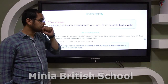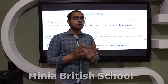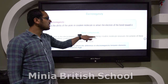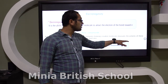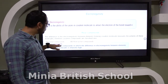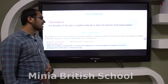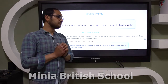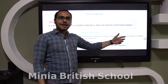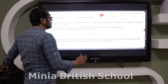Electronegativity plays a very important role in defining the kind of compounds, such as polar compounds, non-polar compounds, and ionic compounds. In our lesson we will study only polar compounds. The difference in electronegativity between elements forming covalent molecules measures the polarity of these molecules. Polar compounds are covalent compounds in which the difference in electronegativity between elements is relatively high.